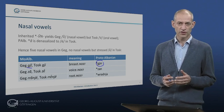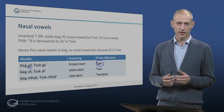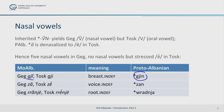An additional change is found with nasal AN. Here, the TOSC result is not A, but a central mid-vowel schwa, written as an E with two dots on it. This vowel can in TOSC be found in stressed position, unlike in most GEG dialects. An example is the indefinite form of the word for 'voice,' TOSC ZE.